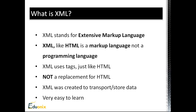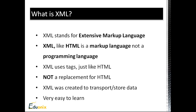XML uses a tag syntax just like HTML, but the difference is with XML you make your own tags - there are no pre-made tags in XML. For example, if you have a list of movies you can have a movies tag with a genre tag. You can also have attributes like you can in HTML. XML is also fairly easy to learn compared to learning an entire programming language.